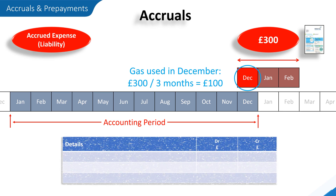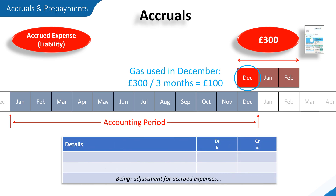Looking at the journal entry required to enter this into our accounts, this £100 will be debited to the gas account, which would then be closed off with the total expense of the year being transferred to the statement of profit or loss for our accounting period. And £100 would be credited to the accruals account. Once all the adjustments have been made, the balance on the accruals account would be transferred to the statement of financial position for our accounting period.